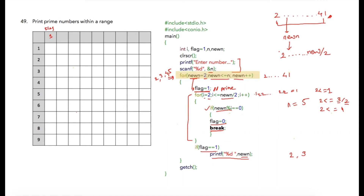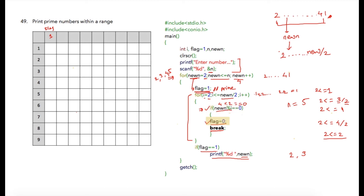For the next iteration, newn is incremented to 4 and flag is reset to 1. Now i is initialized to 2 and the condition is 2 less than or equal to 4 divided by 2, which is 2 less than or equal to 2 — a true condition. Inside the inner loop, 4 modulus 2 equals 0, which is true, so flag is set to 0 and we break out of the inner loop. Since flag is now 0, the condition is false and 4 is not printed.